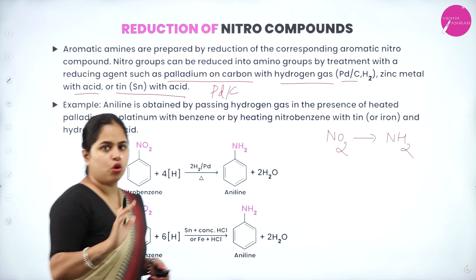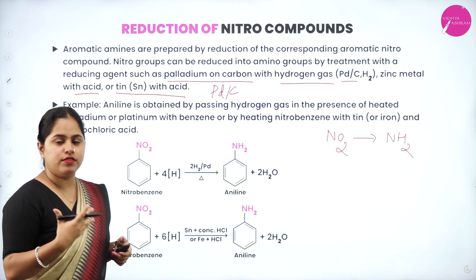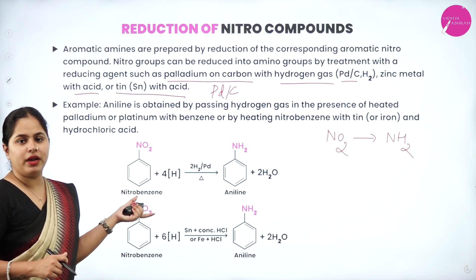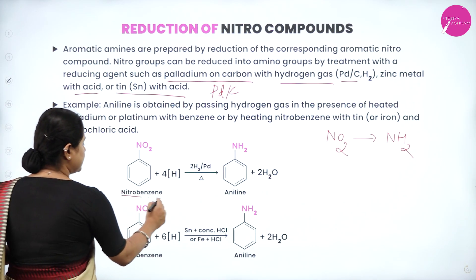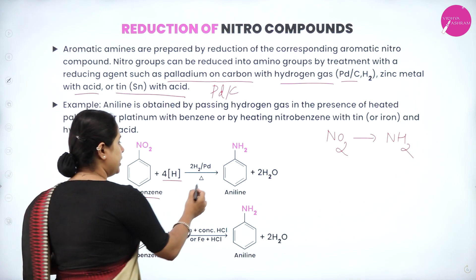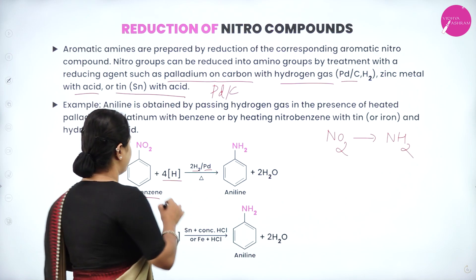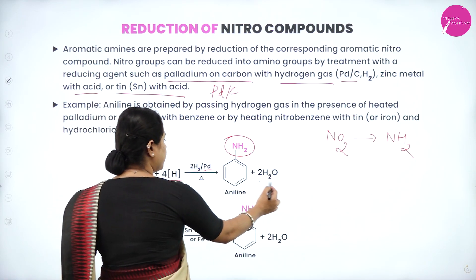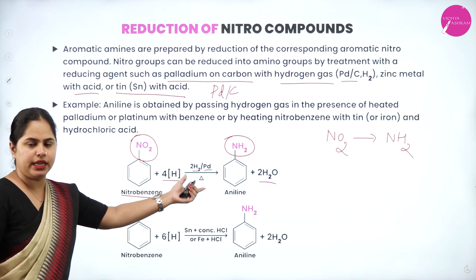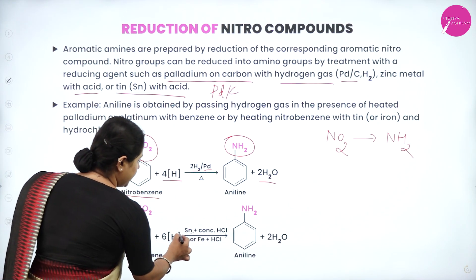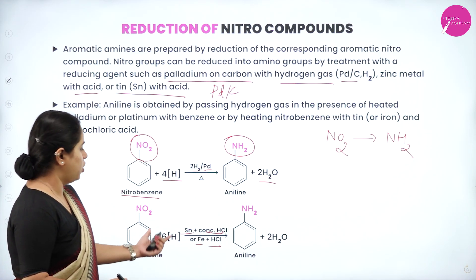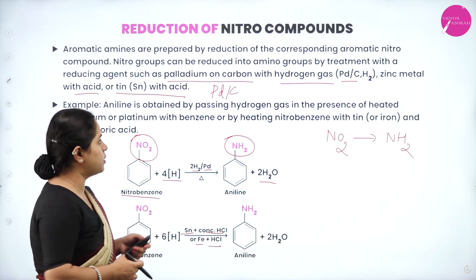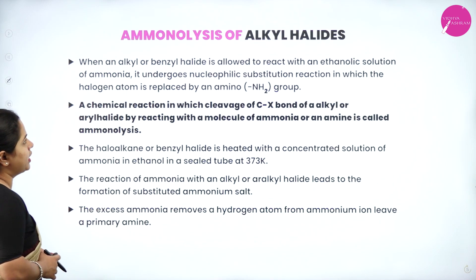For example, to prepare aniline, nitrobenzene is taken and treated with palladium on carbon and hydrogen gas. The nitro group is reduced to an amino group, giving aniline — an aromatic amine — with water as a byproduct. Alternatively, tin or iron in the presence of an acid can also reduce the nitro group to an amino group. This is the method for preparation of aromatic amines.